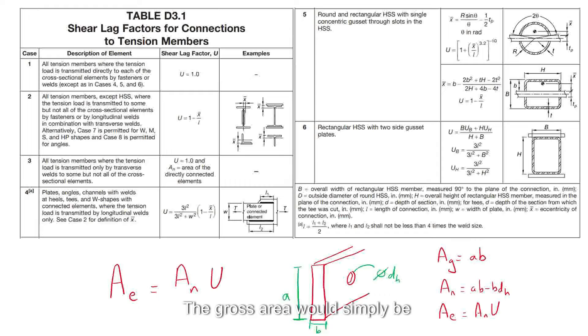The gross area would simply be A multiplied by B. The nominal area would be the gross area minus the area of the hole, which is the diameter of the hole multiplied by the thickness. The effective area would be the nominal area multiplied by the factor u.